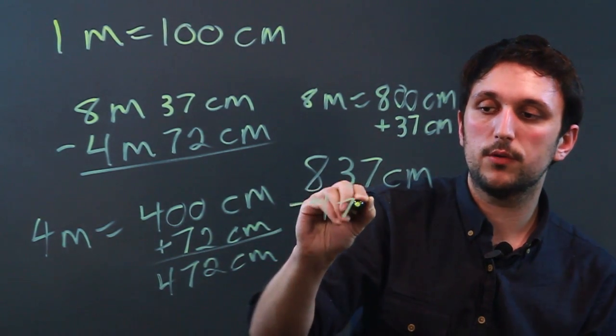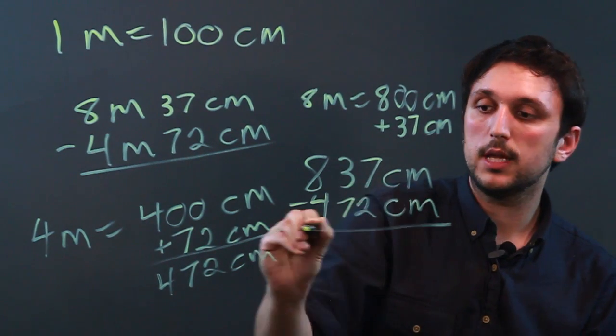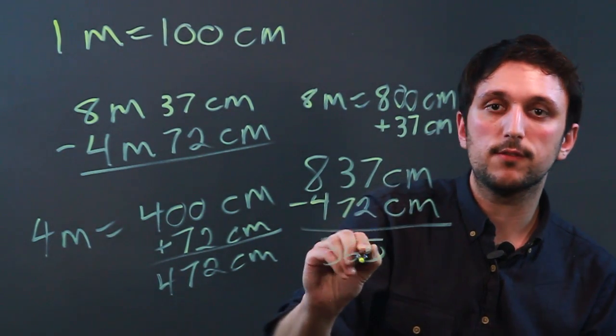So 837 minus 472 equals 365 centimeters.